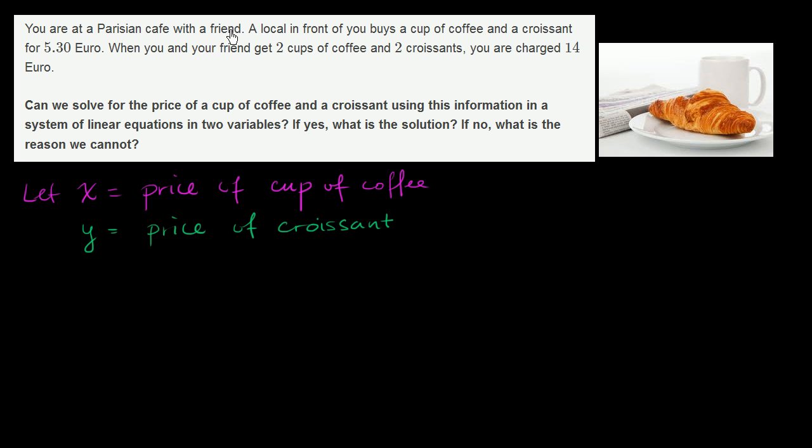So we first have this information of what the local in front of us did. The local in front of us buys one cup of coffee and one croissant for 5.30 euro. So how would we set that up as an equation? Well, we got one cup of coffee, so that's going to be 1x, or we could just write it x, plus 1y, because he got one croissant,